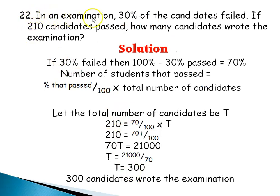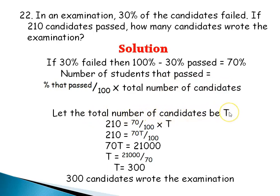Question 32: In an examination, 30 percent of the candidates failed. If 210 candidates passed, how many candidates wrote the examination? Since 30% failed, 100% minus 30% gives us 70% passed. To find the total number of candidates, let's represent it with C. We know 210 candidates passed, and that equals 70% of C.